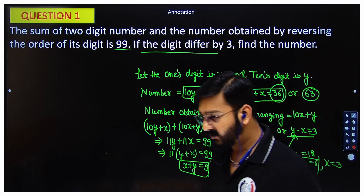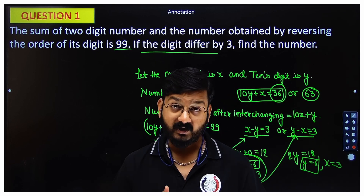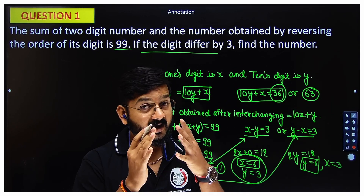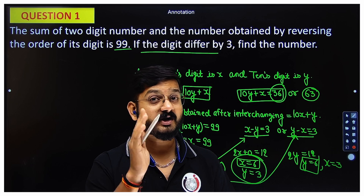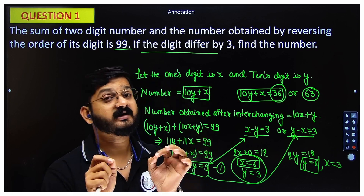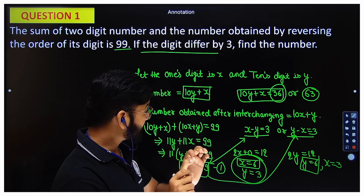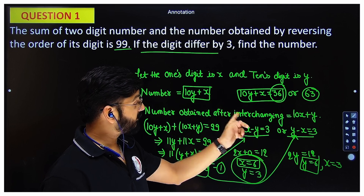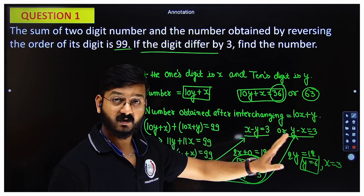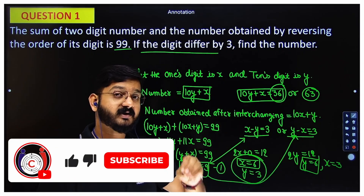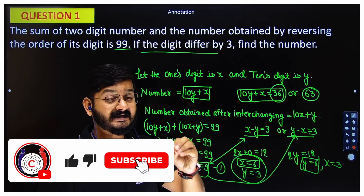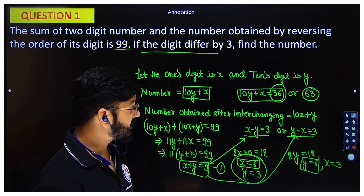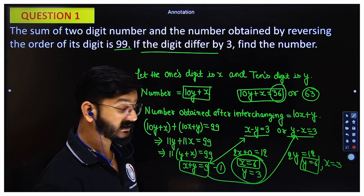There are multiple points where a student can go wrong, so be careful at two places: first, how to correctly write the number using place values; and second, when digits differ by a certain amount, you must form two cases because the question doesn't specify which digit is greater.